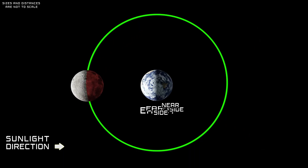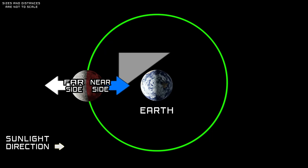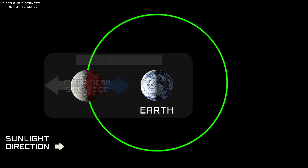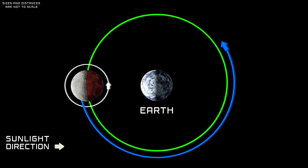By observing the Moon's orbit, we can see that the near side always faces Earth, while the far side always faces away. This is tidal locking. Tidal locking causes the Moon to rotate around its axis once in the same amount of time it takes to orbit Earth once.